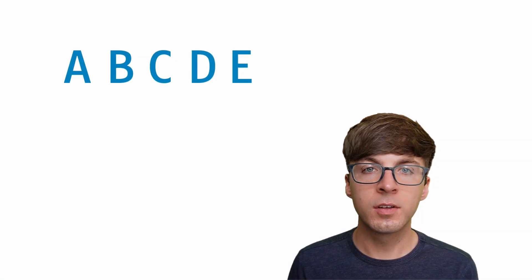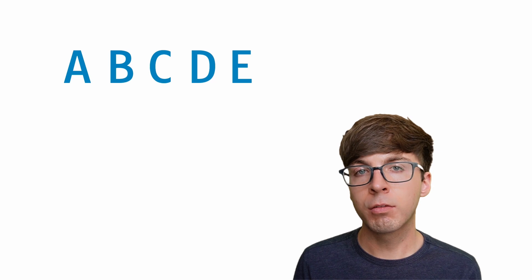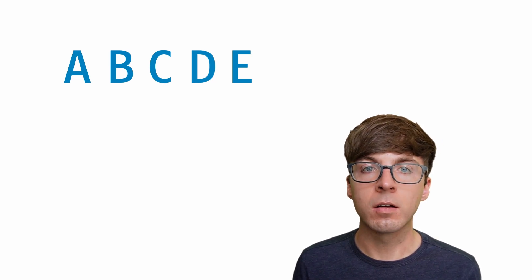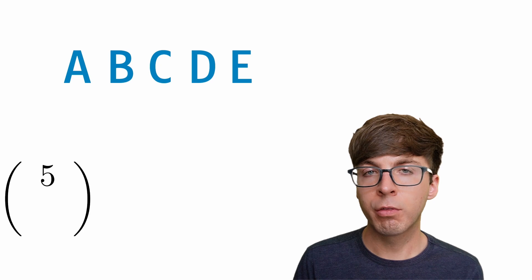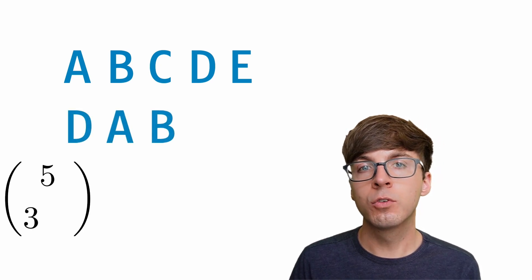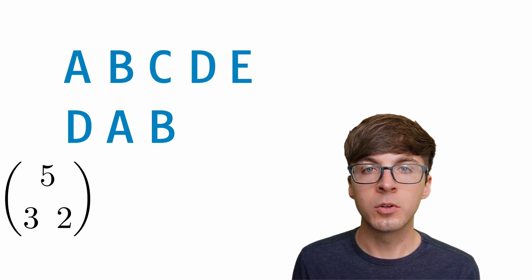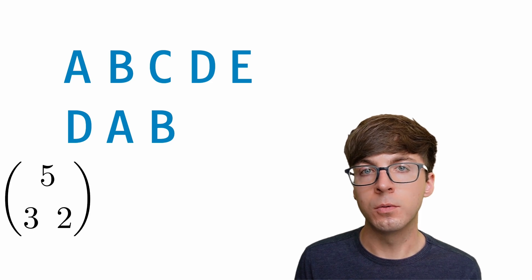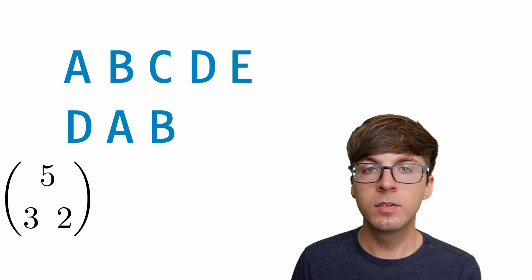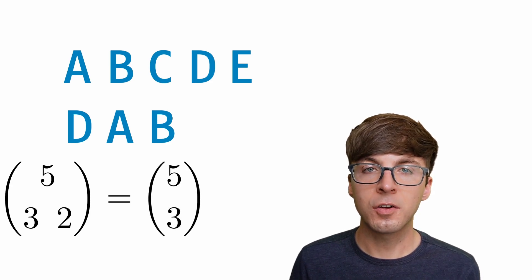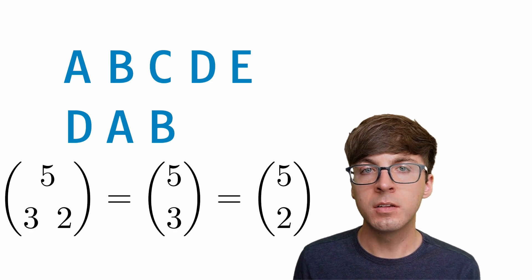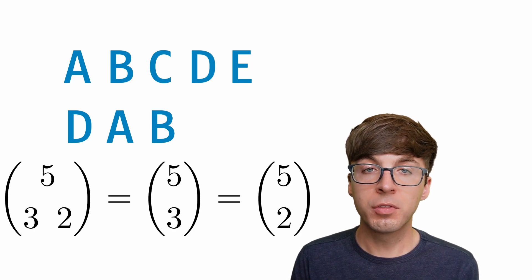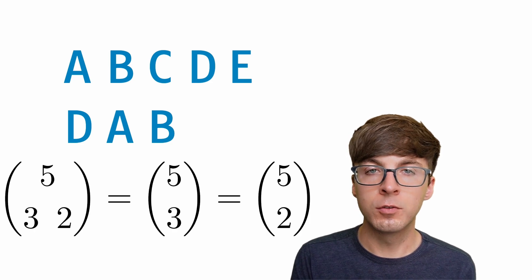The third example was the combination problem — letters A through E, select three, order doesn't matter. As a multinomial coefficient: five letters, choose three to be in the selected group and two to be omitted. We get five choose three, two. This turns out to equal five choose three, and also five choose two. This is an added benefit of the multinomial coefficient — we can immediately see why five choose three and five choose two are the same thing, because both are equivalent to five choose a group of two and a group of three.